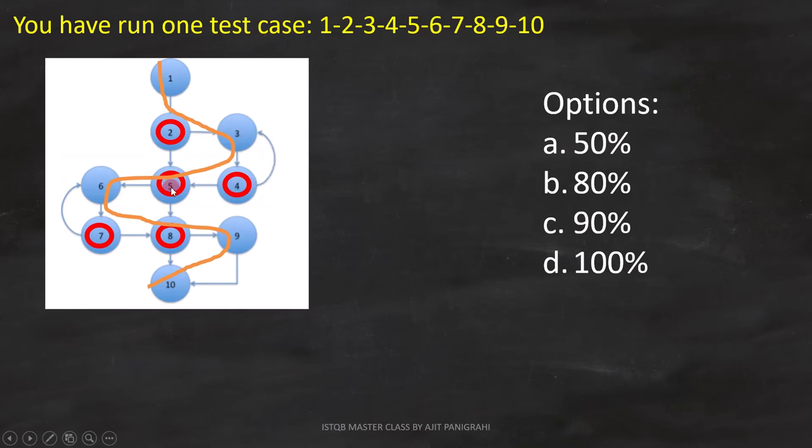The third decision bubble is 5. Here, the path from 5 to 6 is covered, but the path from 5 to 8 is not covered.